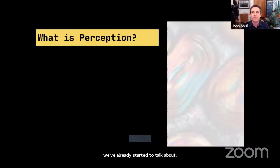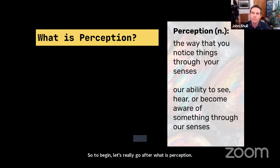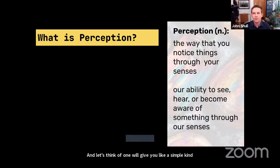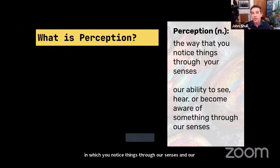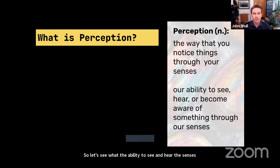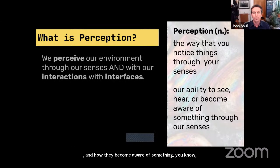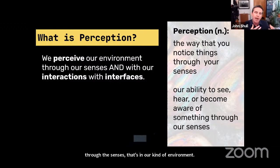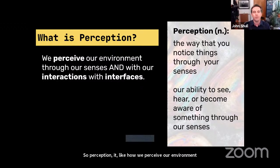To begin, let's really go after what perception is. A simple definition: perception is the way in which you notice things through our senses and sensory organs — the ability to see and hear, and how we become aware of something through senses in our environment. It's how we perceive our environment through these senses and, importantly, our interactions with interfaces.